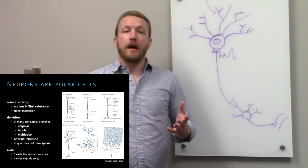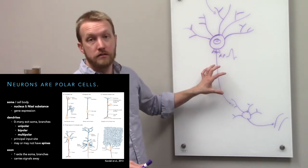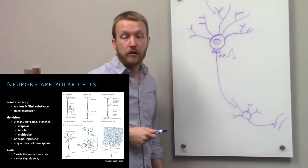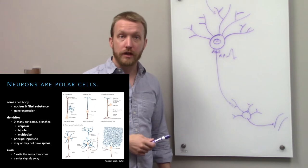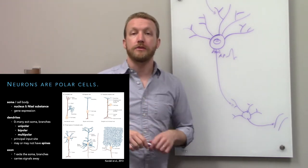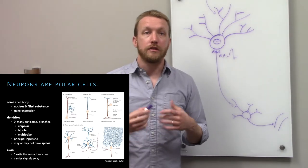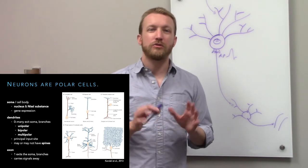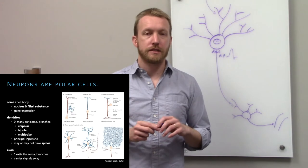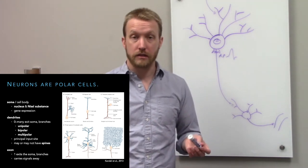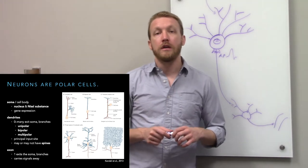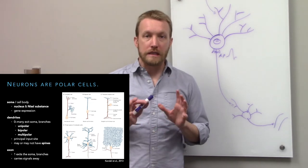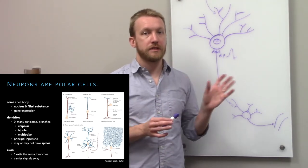All neurons have a cell body and an axon, but they have a variable number of dendrites — this is what distinguishes different types of neurons. Some have zero dendrites. Unipolar, or pseudo-unipolar neurons, have no true dendrites. They have specialized extensions coming off the axon that can sense things like pressure on the skin, heat, cold, or acid — but they're not true dendrites coming off the cell body; they're just specialized parts of the axon.